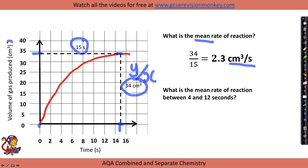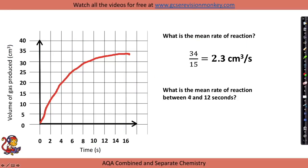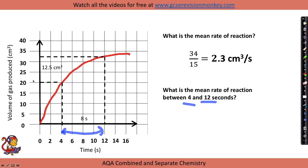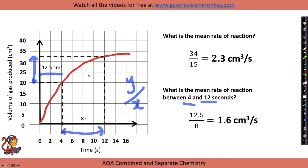They could also ask for the mean rate of reaction between two specific time points — for example between 4 and 12 seconds. Draw dotted lines up from each time point to the curve and across to the y-axis. Between 4 and 12 seconds the time interval is 8 seconds, and the volume of gas produced in that interval is approximately 12.5 cm³. So the mean rate of reaction for that section is 12.5 ÷ 8 = 1.6 cm³ per second.